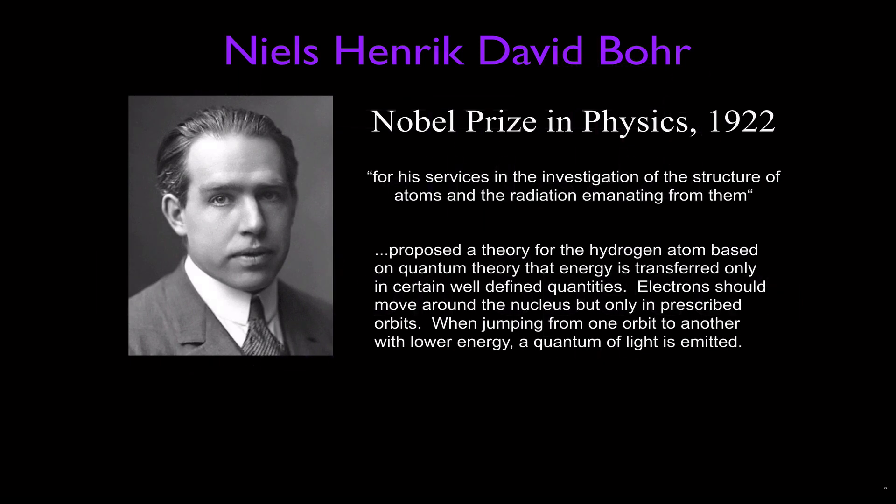The Bohr model — that is Niels Heinrich David Bohr. He came up with the Bohr model. For coming up with the Bohr model to explain absorption and emission of energy in atoms, he won the Nobel Prize in Physics in 1922 for his services in the investigation of the structure of atoms and the radiation emanating from them. He proposed a theory for the hydrogen atom based on the quantum theory that energy is transferred only in certain well-defined quantities.